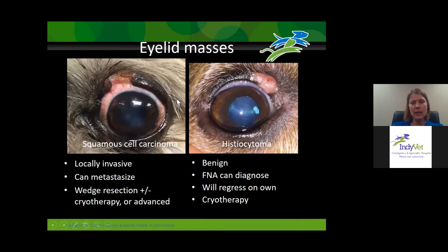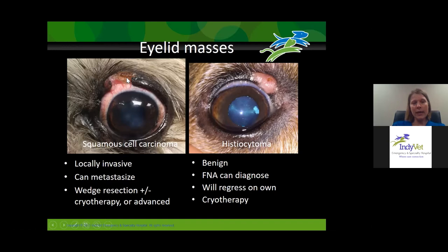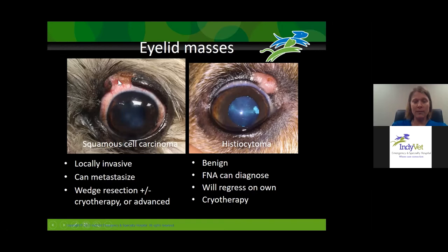There are a couple other eyelid masses we can see in dogs. Squamous cell carcinomas tend to be locally invasive and can metastasize, especially later in the disease process. They can be amenable to wedge resection and cryotherapy; if larger, we may need advanced surgical grafting. This patient presented with a very inflamed, ulcerated eyelid — I performed cryotherapy and biopsied it, diagnosing squamous cell carcinoma. It improved so much that the owner declined the recommended wedge resection. The dog came back several months later with recurrence and ultimately did well after further treatment.